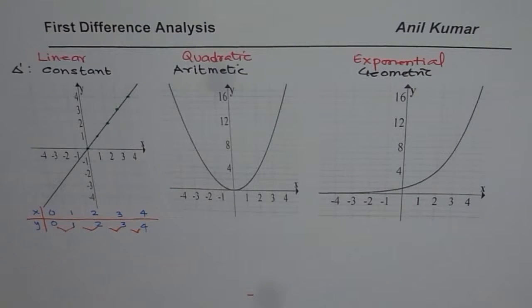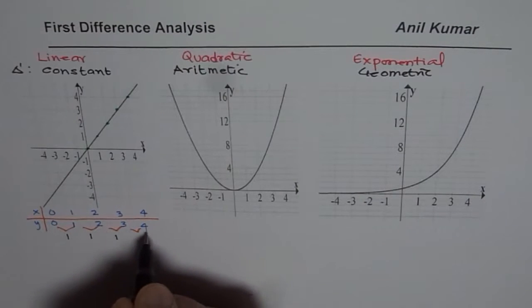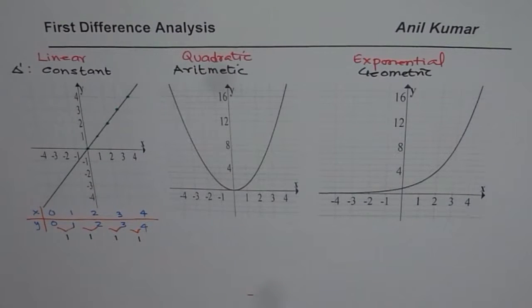So what we notice here, that the first difference is 1, which is constant. 3 minus 2, 4 minus 3, 1. And what we see on the graph is,